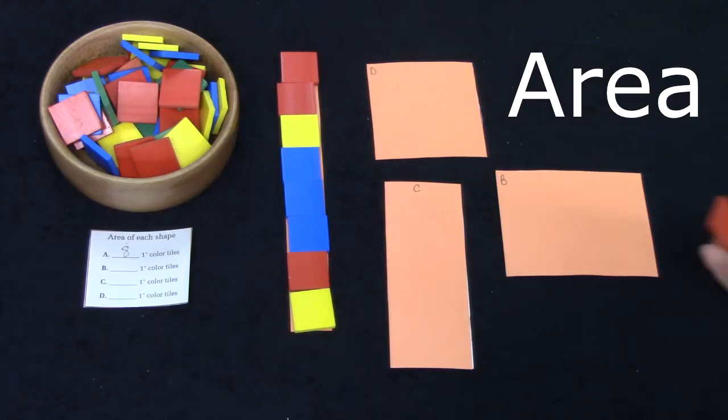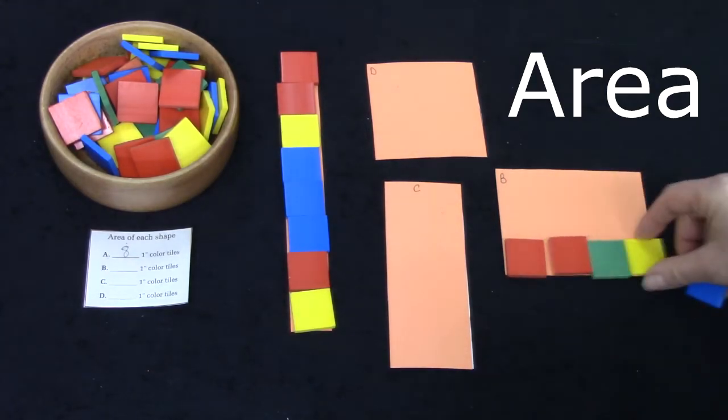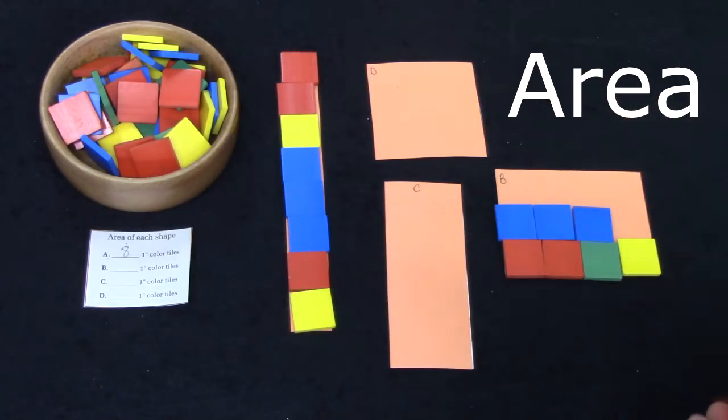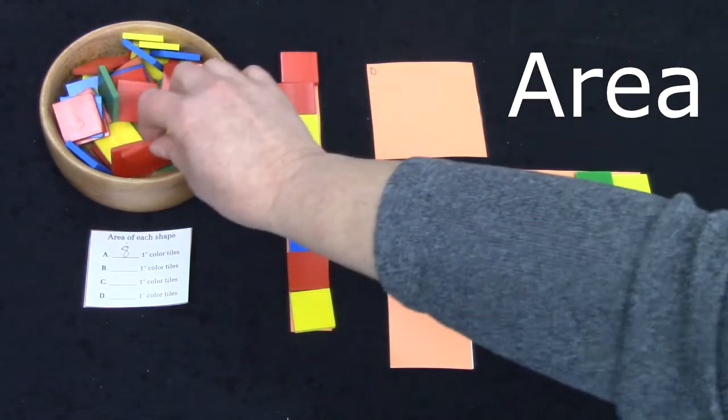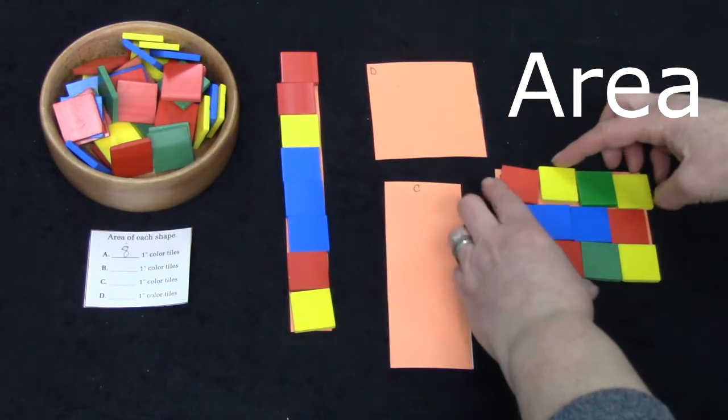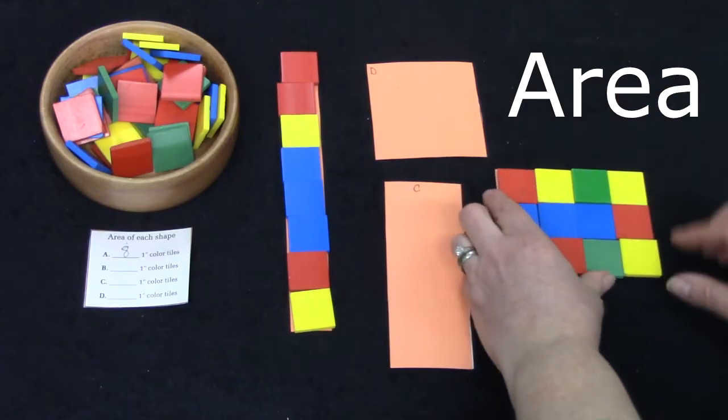Let's take a look at shape B. I am going to use my tiles. When I'm using my tiles to measure the area of the shape I make sure that my tiles are close together and there's no space in between.